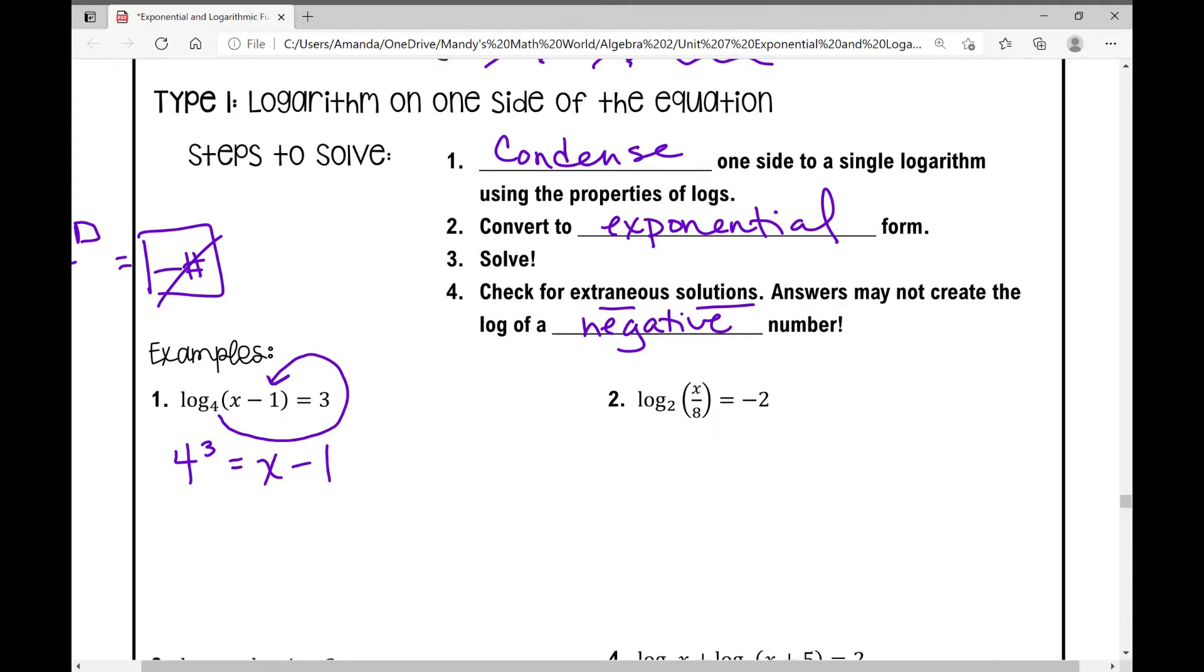What is four to the power of three? That's 64. And now we're just solving this basic equation. How do I get the value of x? Add one to both sides. So I get 65 equals x. Is it a valid solution? I'll plug in 65 for x. Log base four of 65 minus one. That's 64, which is a positive value. Therefore, my answer is valid.